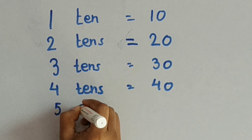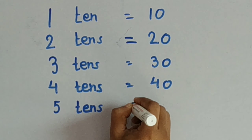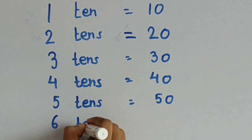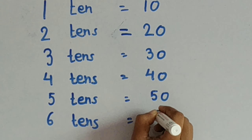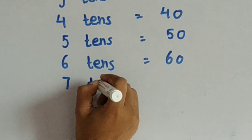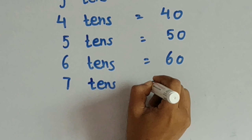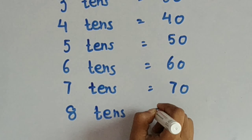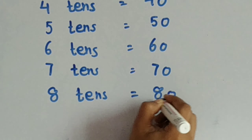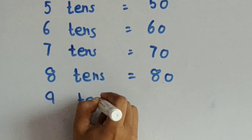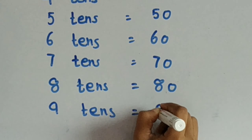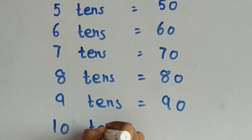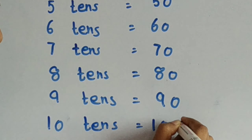Next will be what? Five tens: 50. Six tens: 60. Seven tens: 70. Eight tens: 80. Nine tens: 90. And then ten tens: 100.